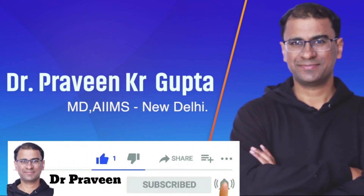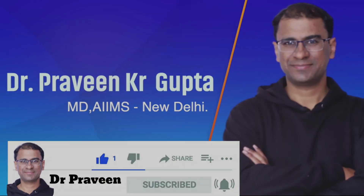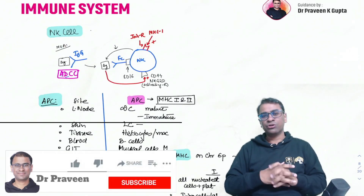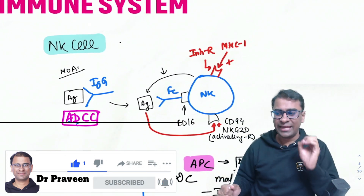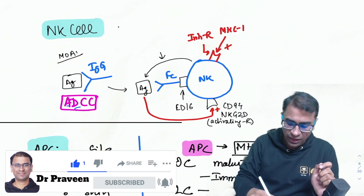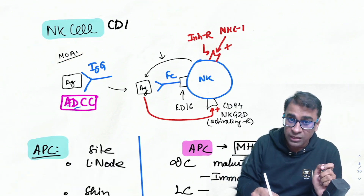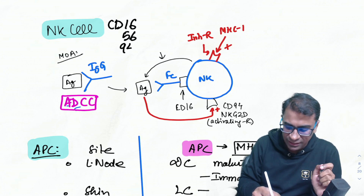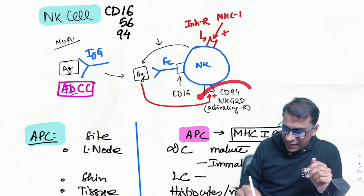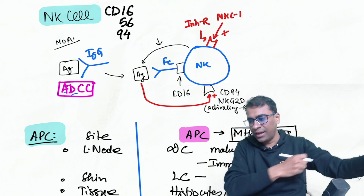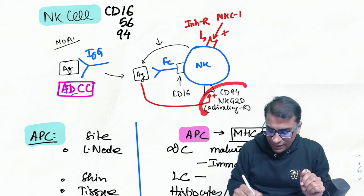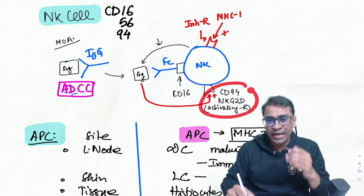Welcome to general pathology. The first topic is the immune system, starting with last year's NEET PG question on NK cells. The CD markers for NK cells are CD16, CD56, and CD94 — also known as NKG2D.